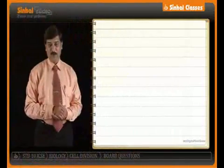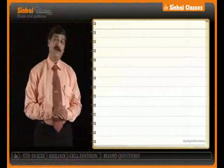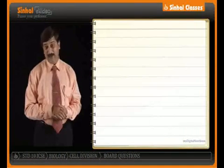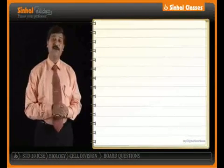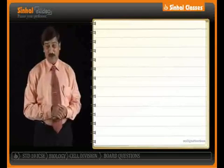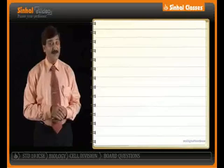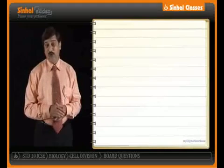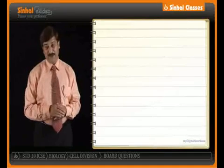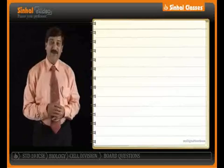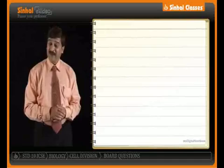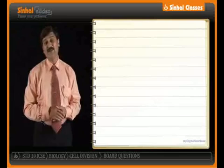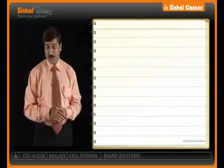In our board papers, we are given time to read the paper. When you are reading the paper in this time limit, you have to read some questions very carefully, because these are the questions which give you maximum marks. The question for five marks can have many sub-questions. You have to see the diagram carefully, take account of the questions, try recalling what you have already studied, and then attempt such questions. These questions can feature in section one and section two, and they normally come for five marks.